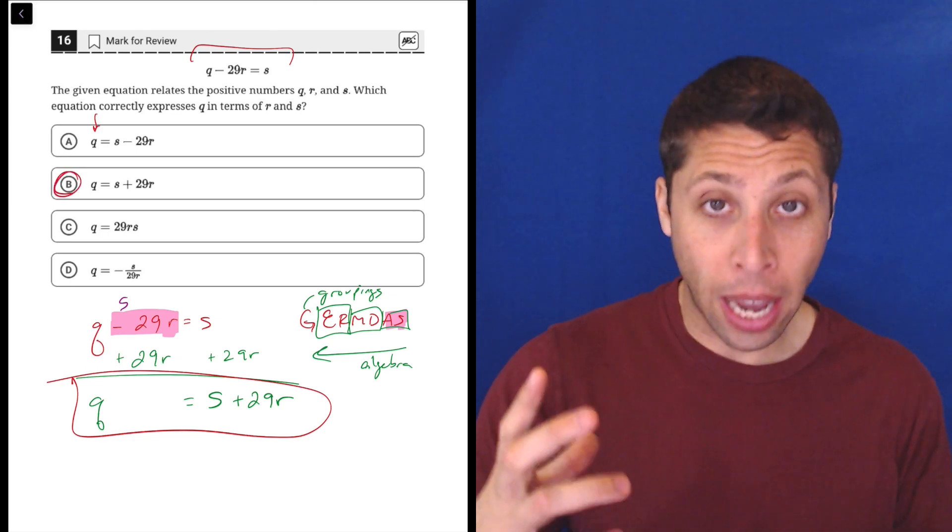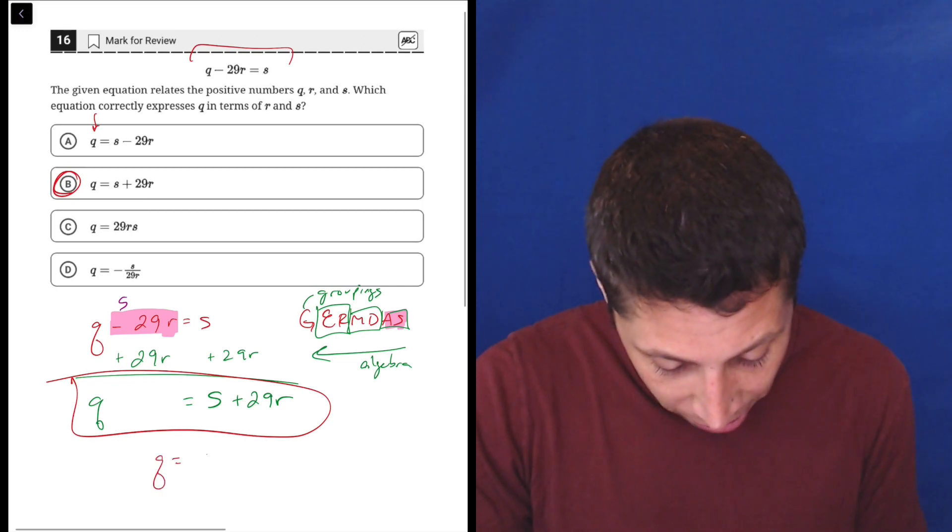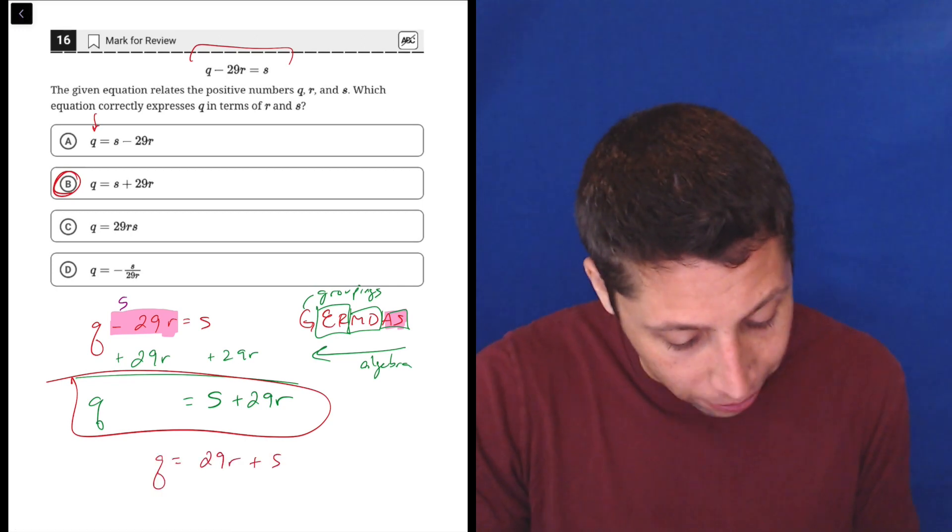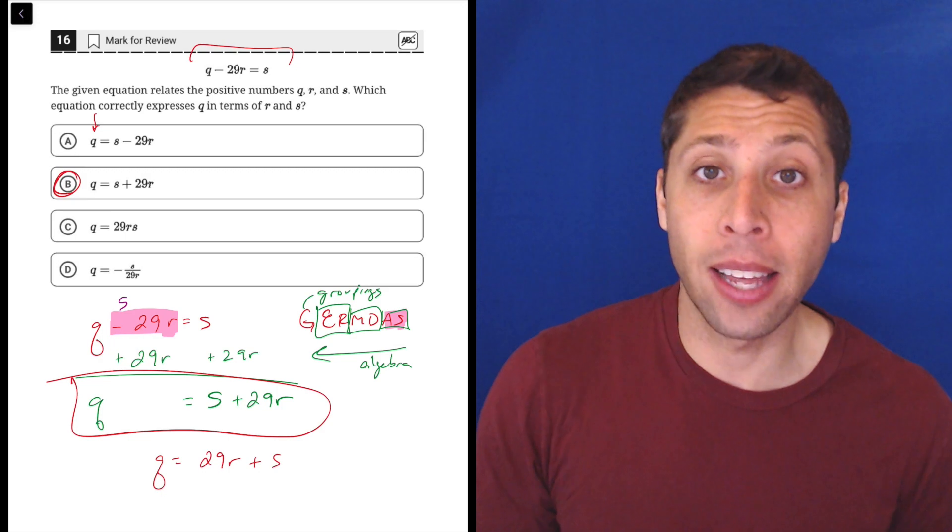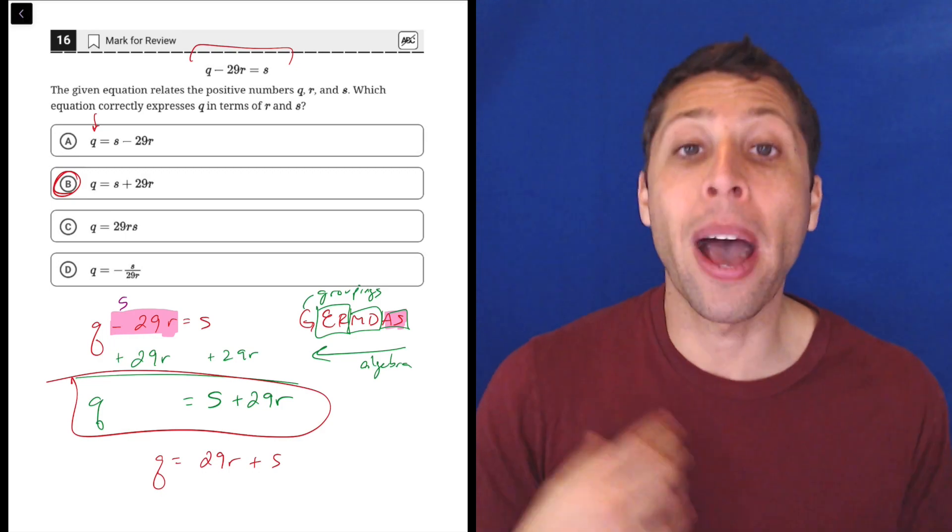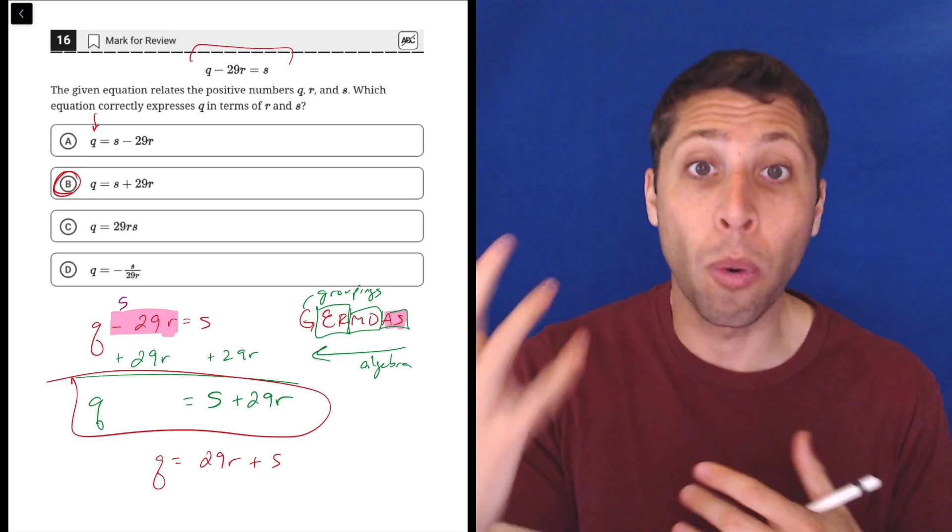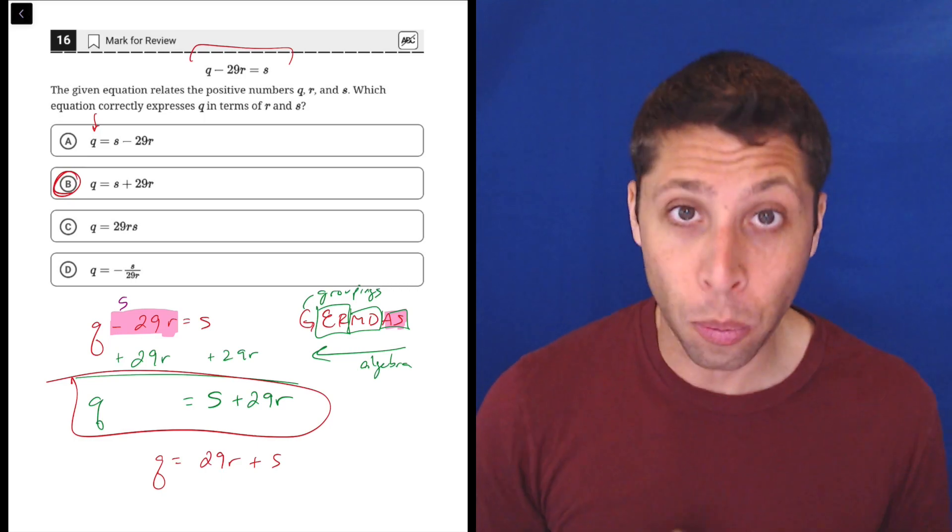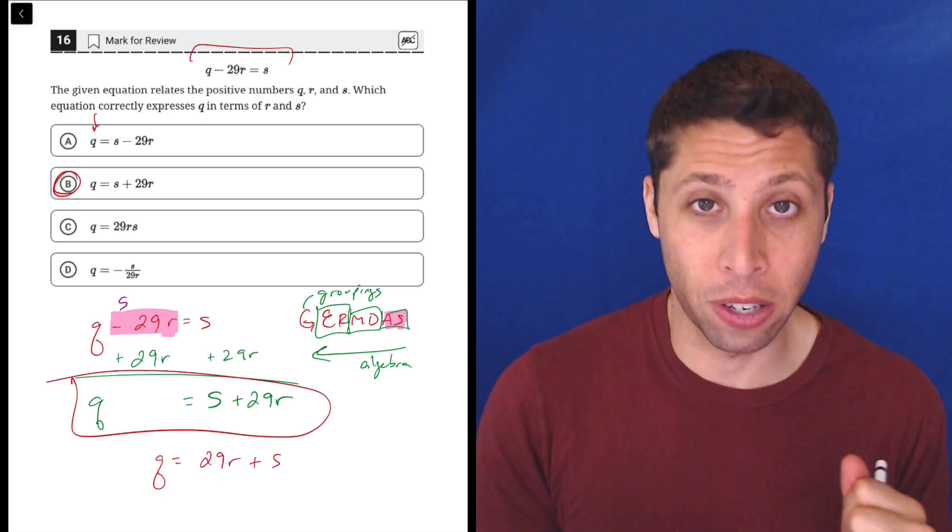Now if you had written it kind of backwards, you could have had Q equals 29R plus S. You need to recognize that that's the same thing because addition is commutative. One plus two is the same as two plus one. It's the same thing when we have variables - the order doesn't really matter.